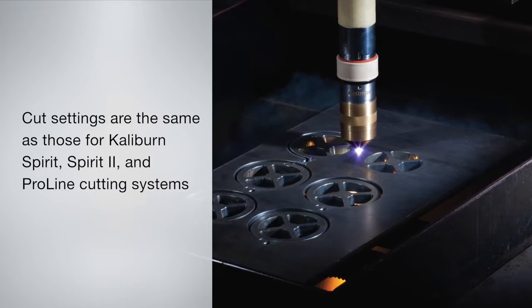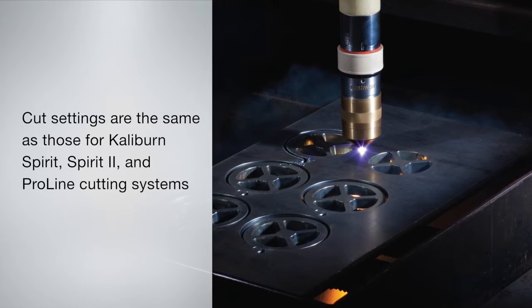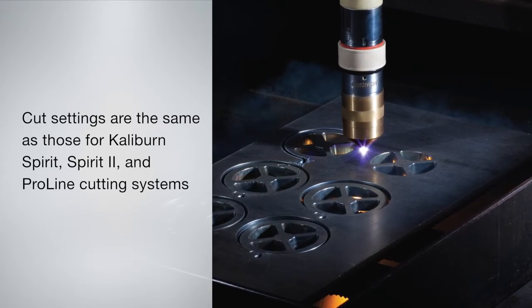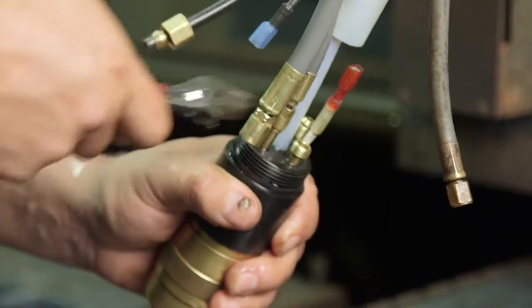The cut settings for the CenterCut torch are the same as those for Caliburn Spirit, Spirit II, and ProLine cutting systems. This video gives you step-by-step instructions for installing your new CenterCut quick disconnect torch.